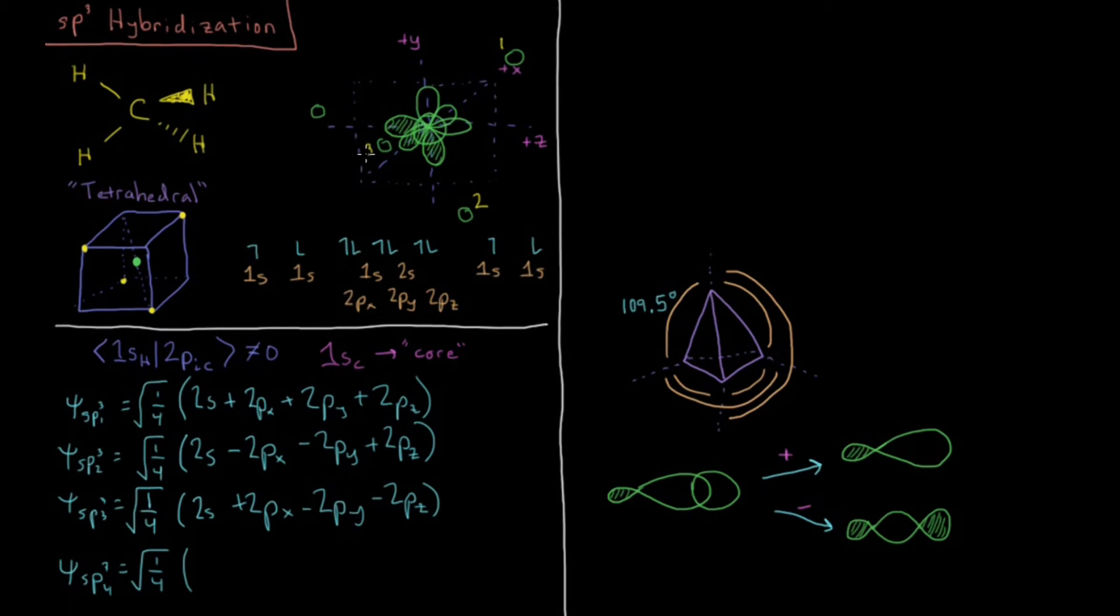And our final orbital is going to be the only possible combination which is both normalized and orthogonal to all these three, which is 2s minus 2px plus 2py minus 2pz. So we're going to go minus x, we're going to go plus y, and minus z, and that leads us in the correct direction there. So that gives us hydrogen number 4, which will interact with sp3 orbital number 4.